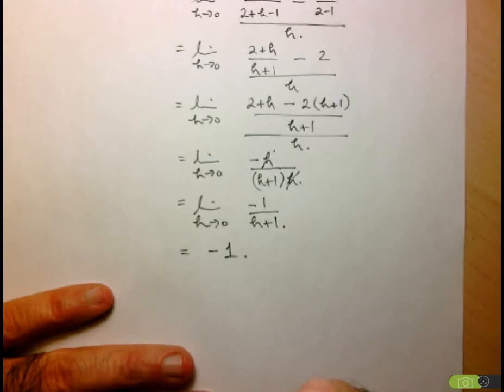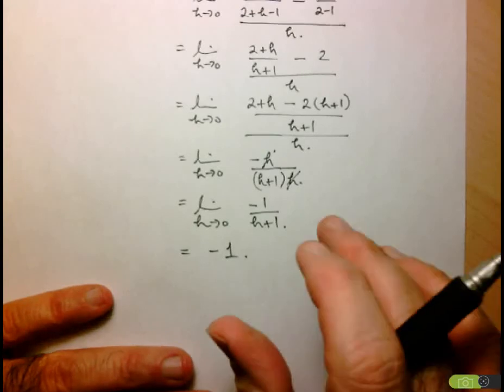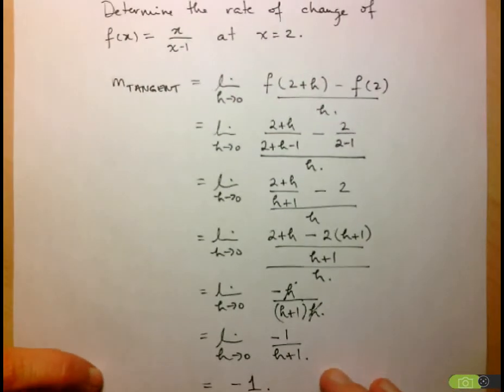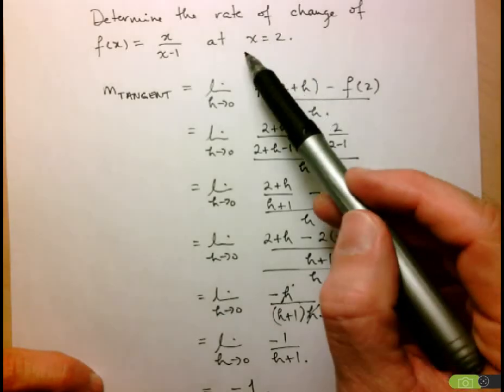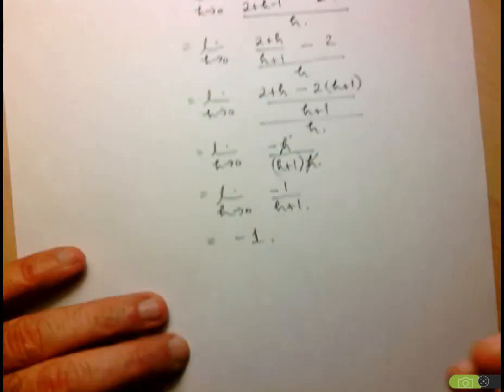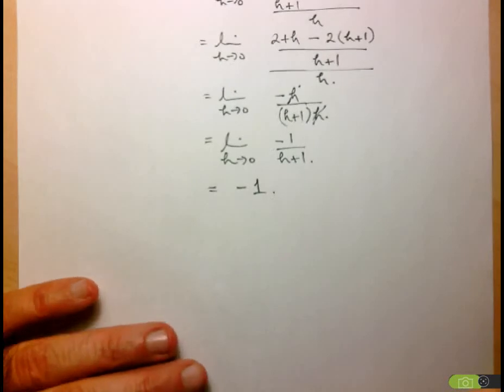This is the slope of the tangent to the function at the point x equals 2. One thing you can do is go on an online grapher, graph this function, and you should see that it would make sense that the slope of the tangent at x equals 2 is equal to negative 1.